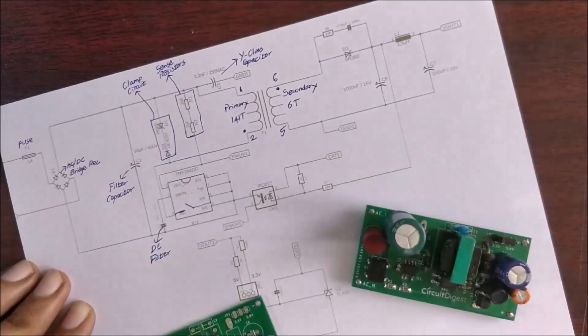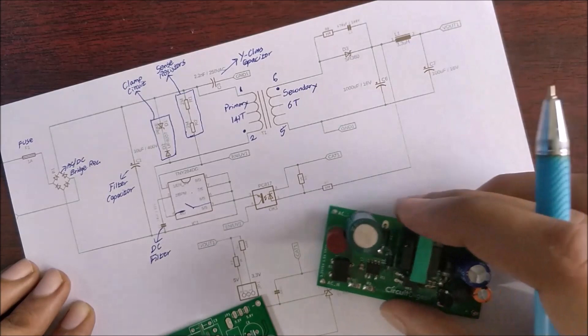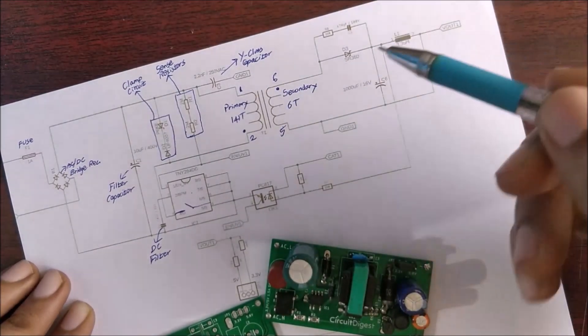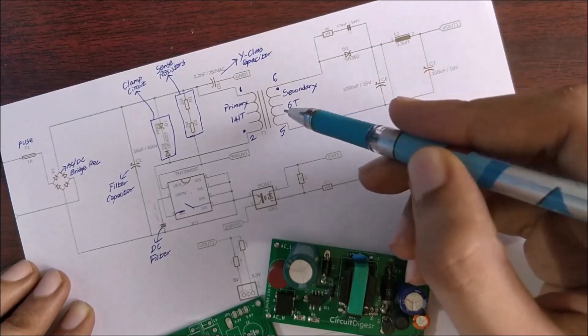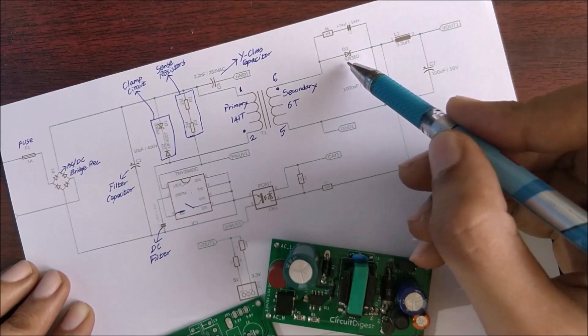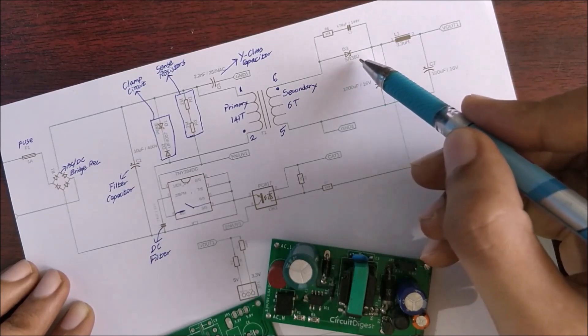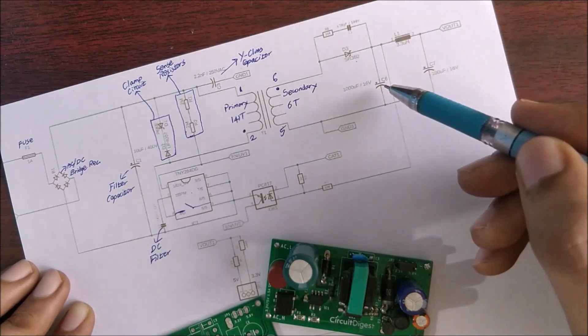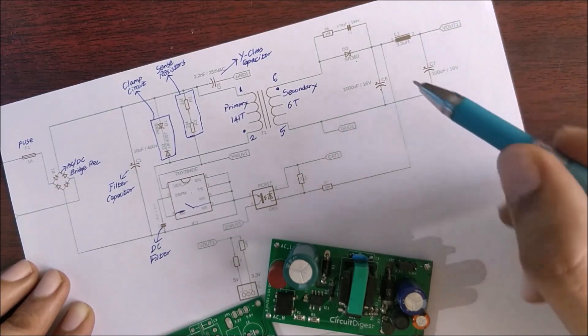Now moving on to the secondary side we have the switched voltage from our secondary side of the transformer that will be rectified using a Schottky diode SR360. As always, as soon as we rectify something we will put a filter capacitor. Here the filter capacitor is 1000 microfarad and 16 volts.